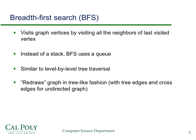So in other words, when you visit a vertex and you finish visiting it, you immediately visit all the vertices on its adjacency list that have not yet been visited. Unlike depth-first search, instead of a stack, breadth-first search uses a queue. And that enables you to do exactly that — visit all the neighbors of the last visited vertex.